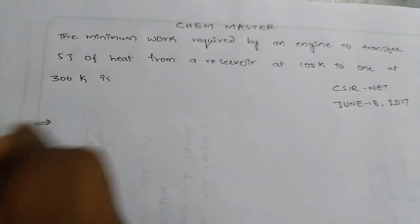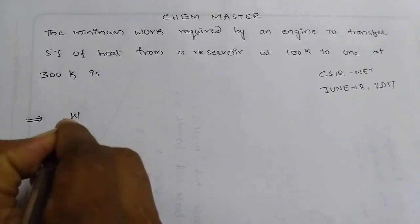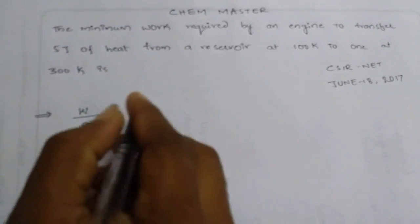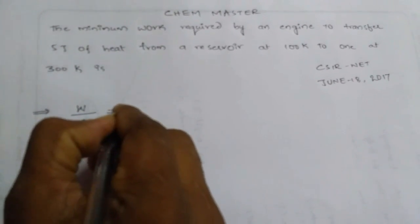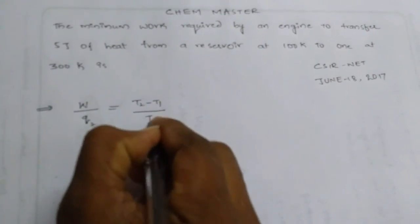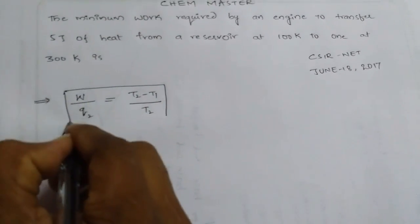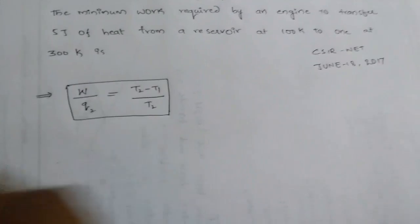We know the formula W/Q2 = (T2-T1)/T2. This is the formula we can get from the Carnot cycle.